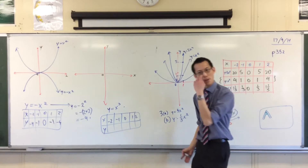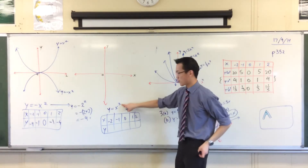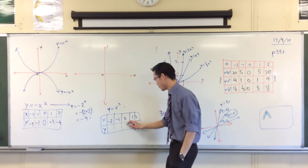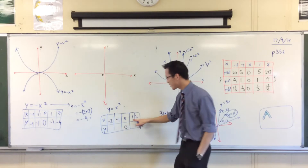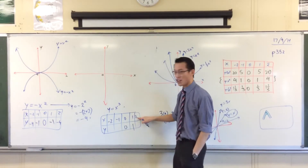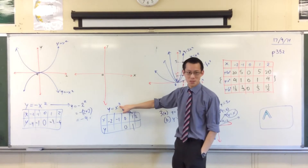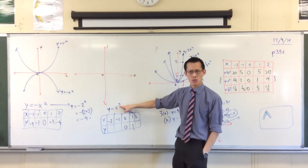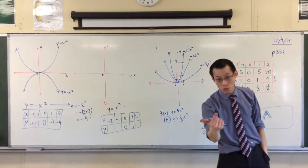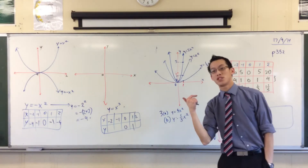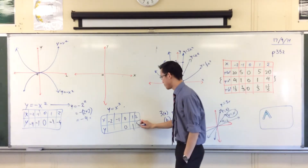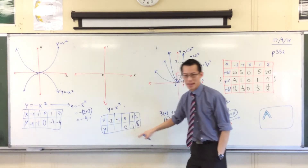Okay, we'll start with the positive numbers because they're a bit easier. 0 cubed is 0. 1 cubed is 1. 2 cubed — 2 times 2 times 2 — is 8. Good, very good.